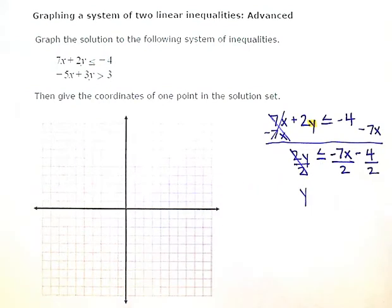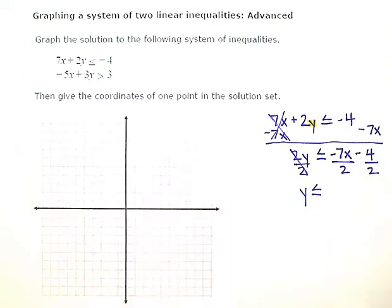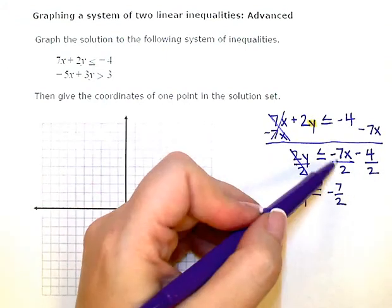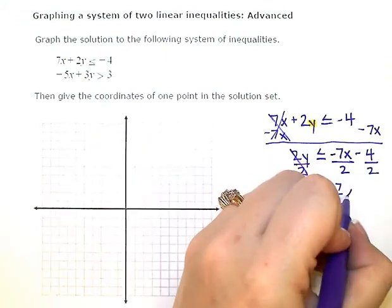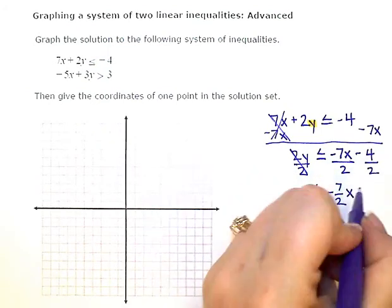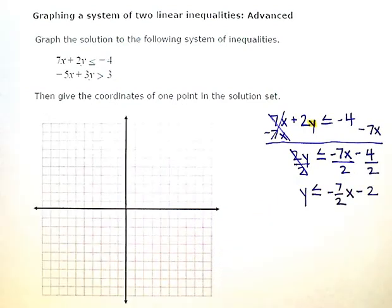And after simplifying, I have y is less than or equal to negative 7 halves. That doesn't reduce or simplify at all. Negative 7 halves x, but 4 divided by 2 is 2. So I have a minus 2 on the end.